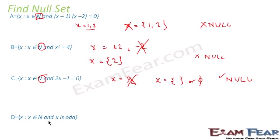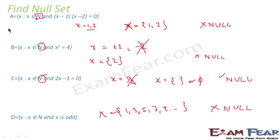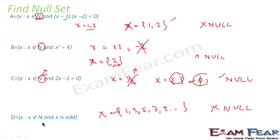One more example: x is a natural number and x is odd. The set would be {1, 3, 5, 7, 9, ...} extending to infinity, so this is not a null set — it has elements. To recap the examples: x = 1 or 2 → not null; x = +2 or −2 with natural number constraint → set is {2}, not null; 2x − 1/2 = 0 gives x = 1/2 which is not a natural number → empty set; and the set of odd natural numbers has many elements → not null.